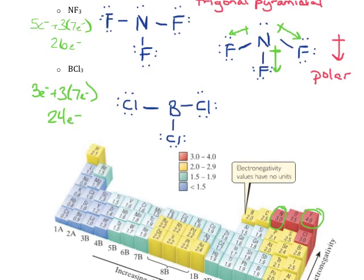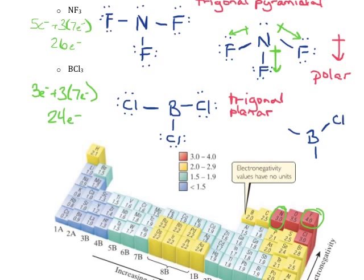We want to think about our electron domains. Following the central atom, there are only three electron domains on boron, which means I'm looking at trigonal planar. Since all three are bonding domains and there are no lone pairs on the central atom, my electron domain geometry is going to be the same as my molecular geometry. So this is also a trigonal planar molecule.